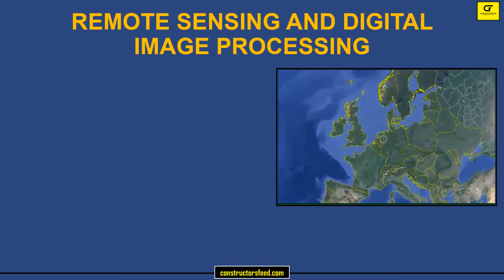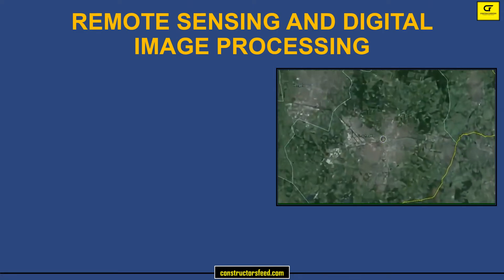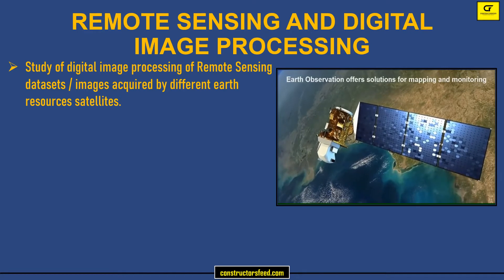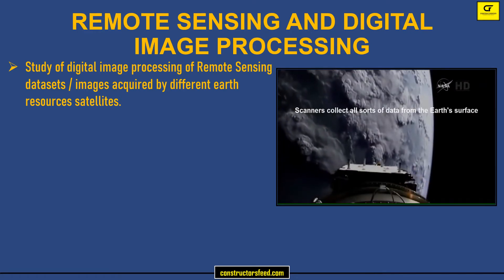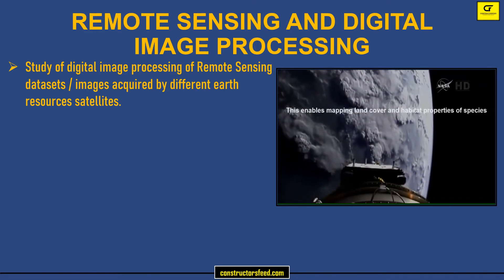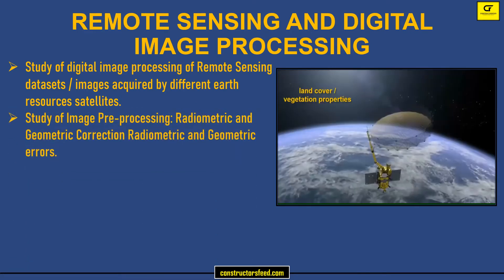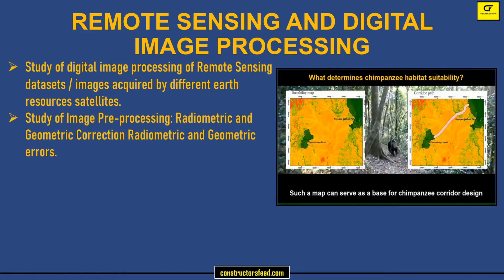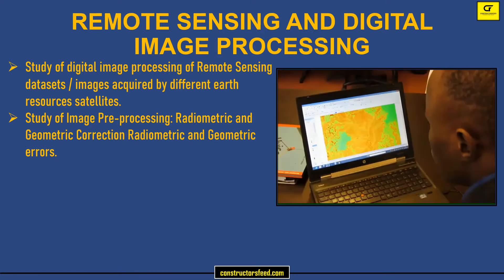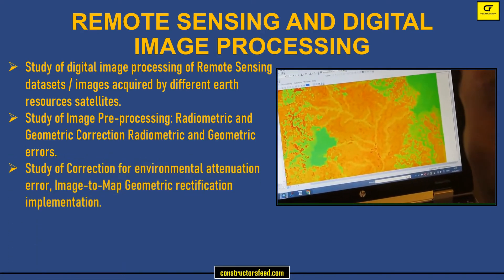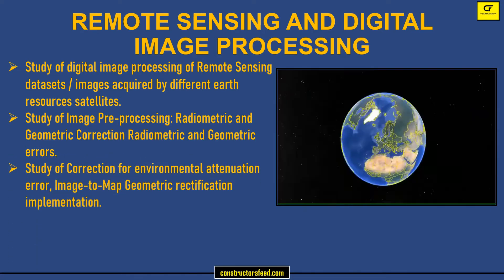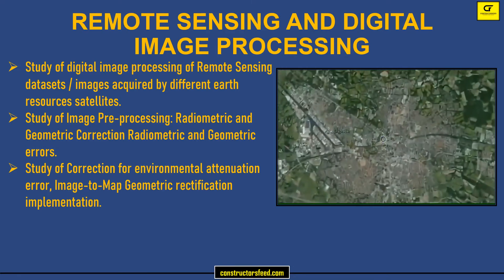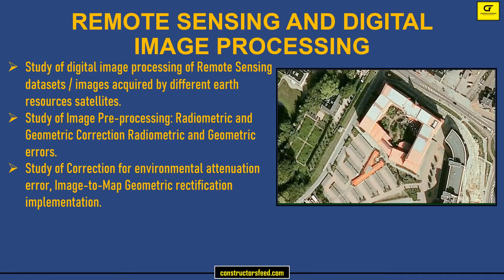Remote Sensing and Digital Image Processing: Study of digital image processing of remote sensing datasets and images acquired by different earth resources satellites. Study of image pre-processing, radiometric and geometric correction, radiometric and geometric errors, correction for environmental attenuation error, and image-to-map geometric rectification implementation. These are the reference books.